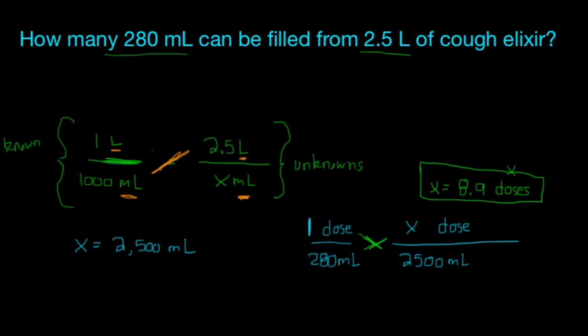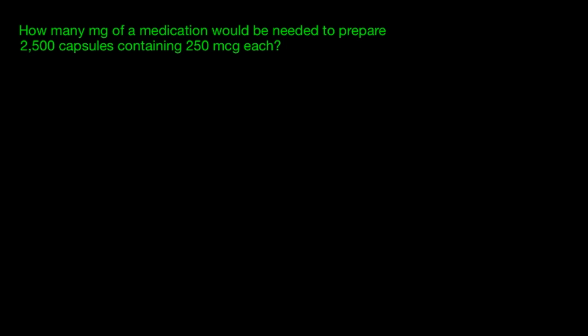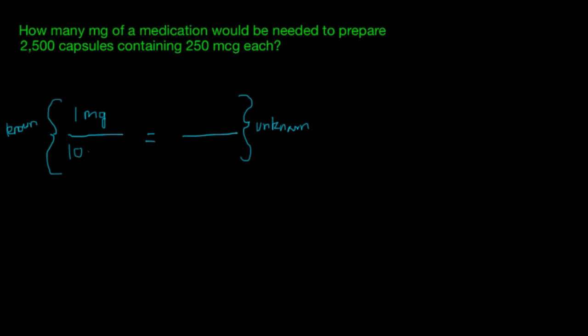The next problem: how many milligrams of medication would be needed to prepare 2,500 capsules containing 250 micrograms each? We are going to do it the same way — set up the two fractions and set them equal to each other. What is our known? Remember, the left side is our known, the right side is our unknown. Our known: one milligram has 1,000 micrograms.